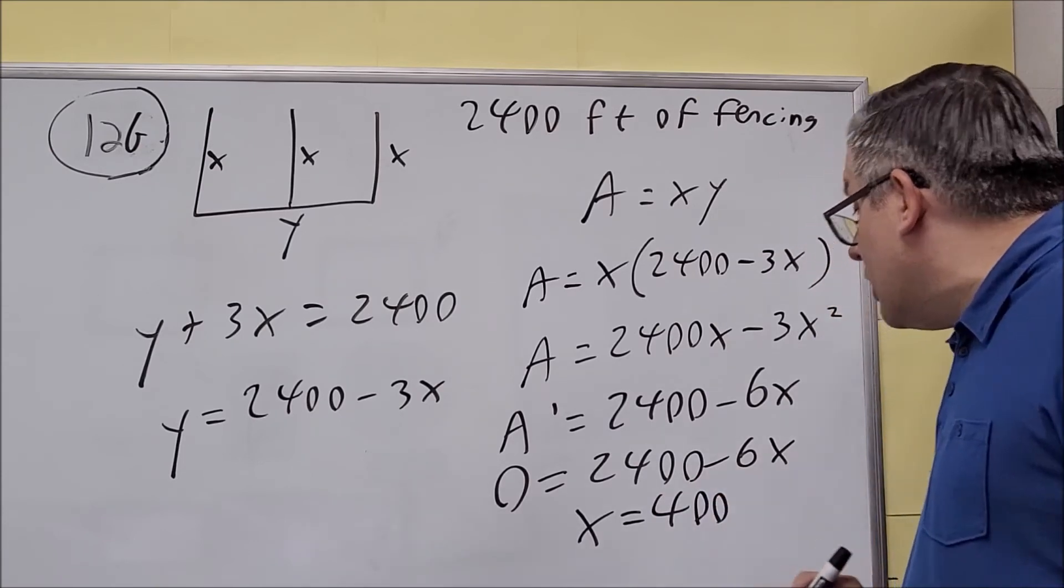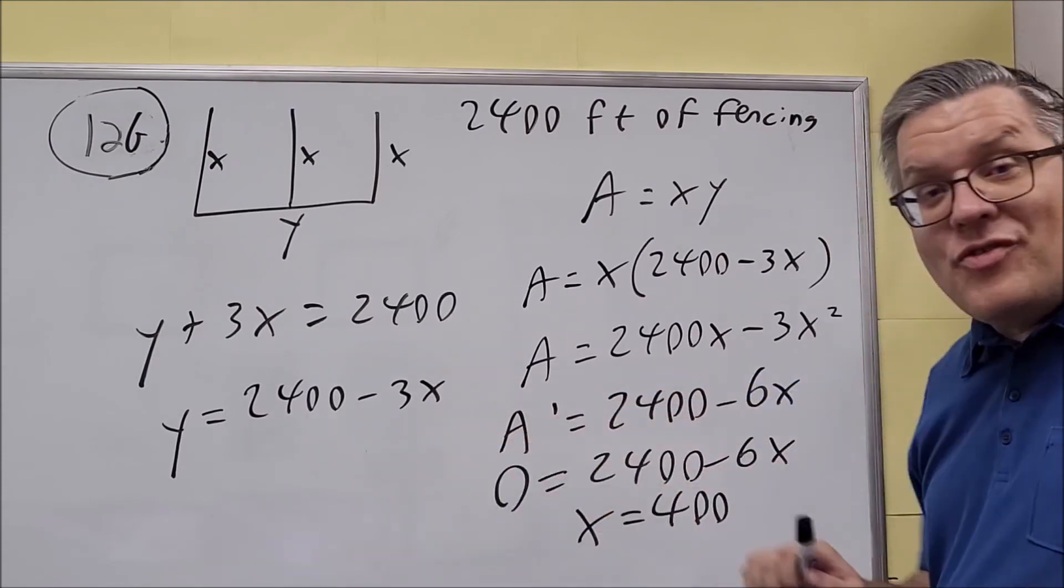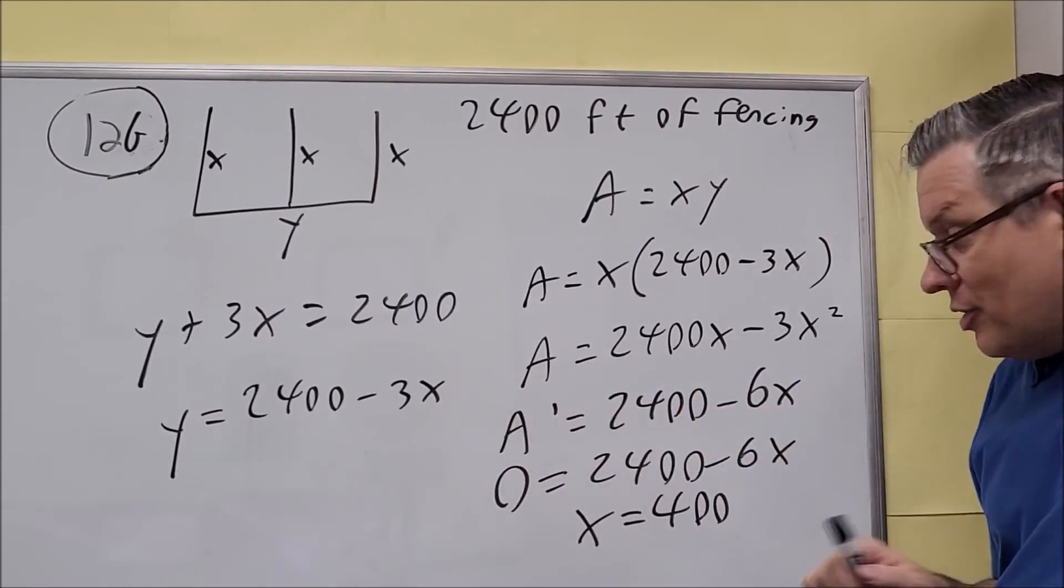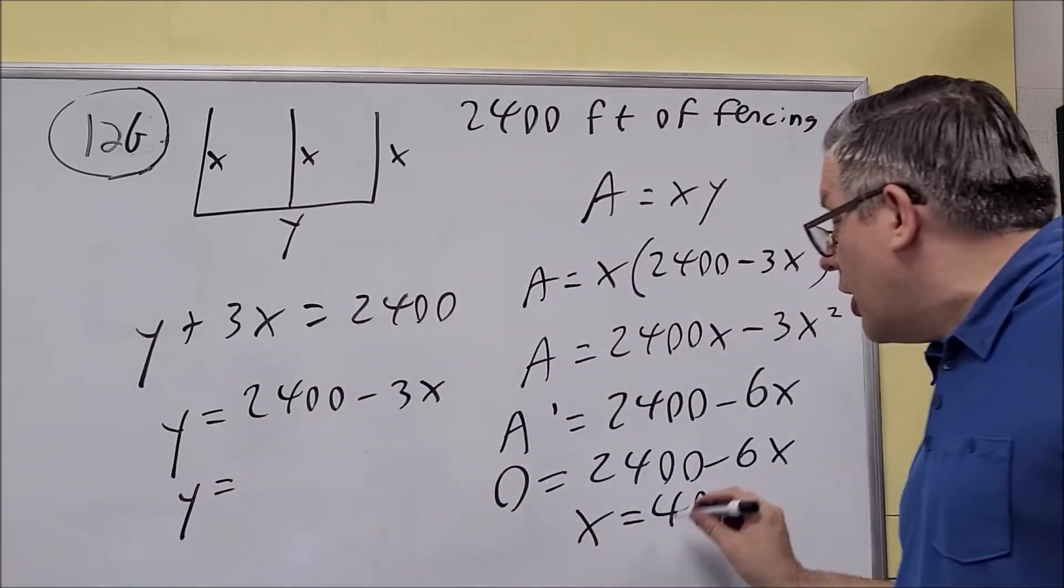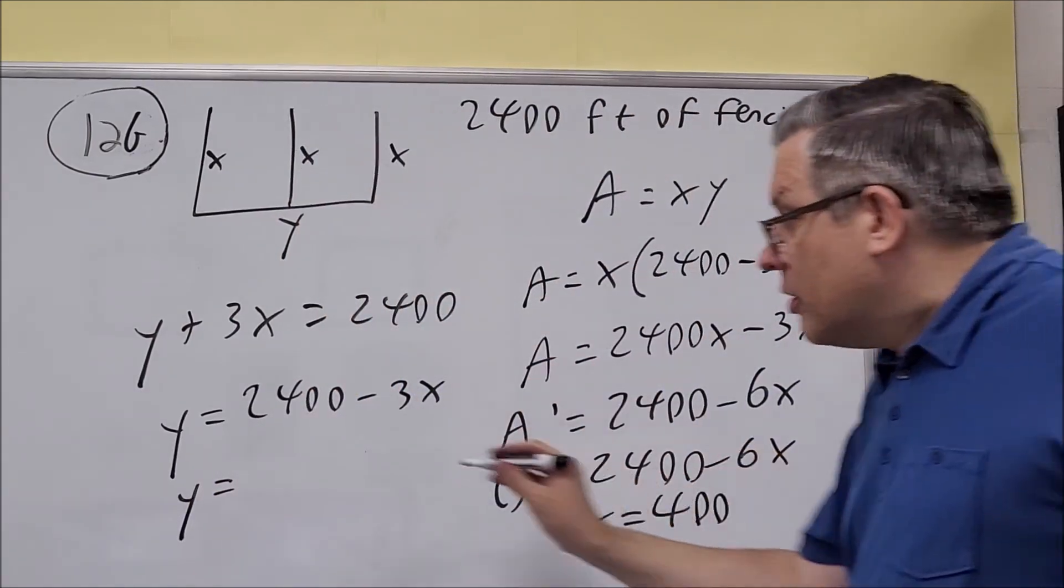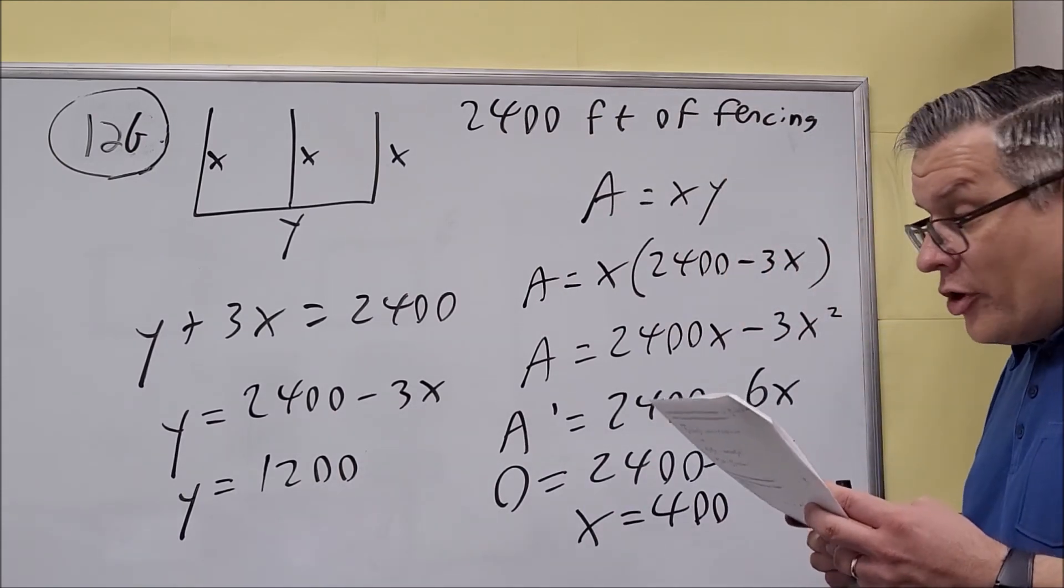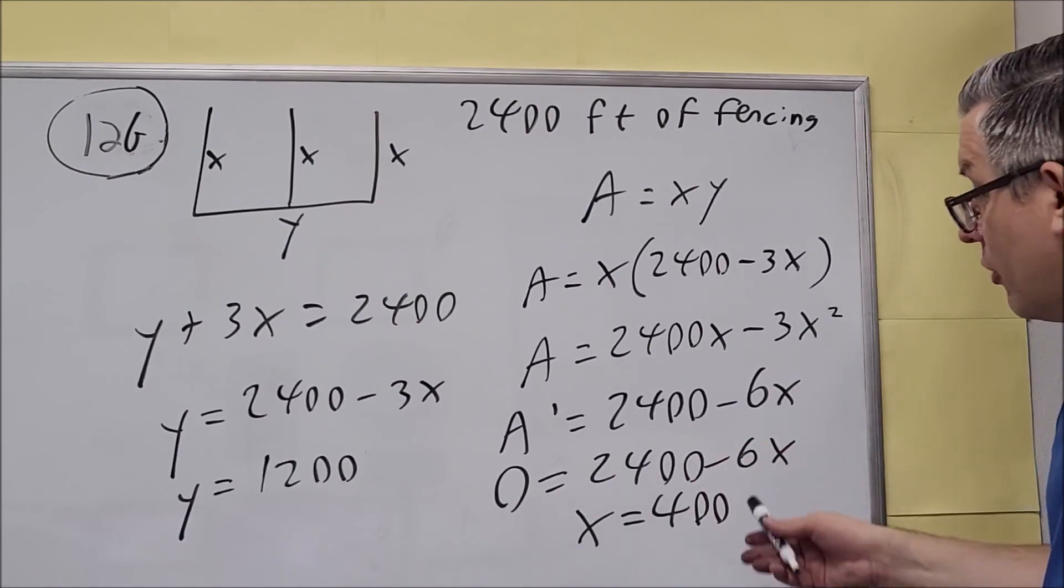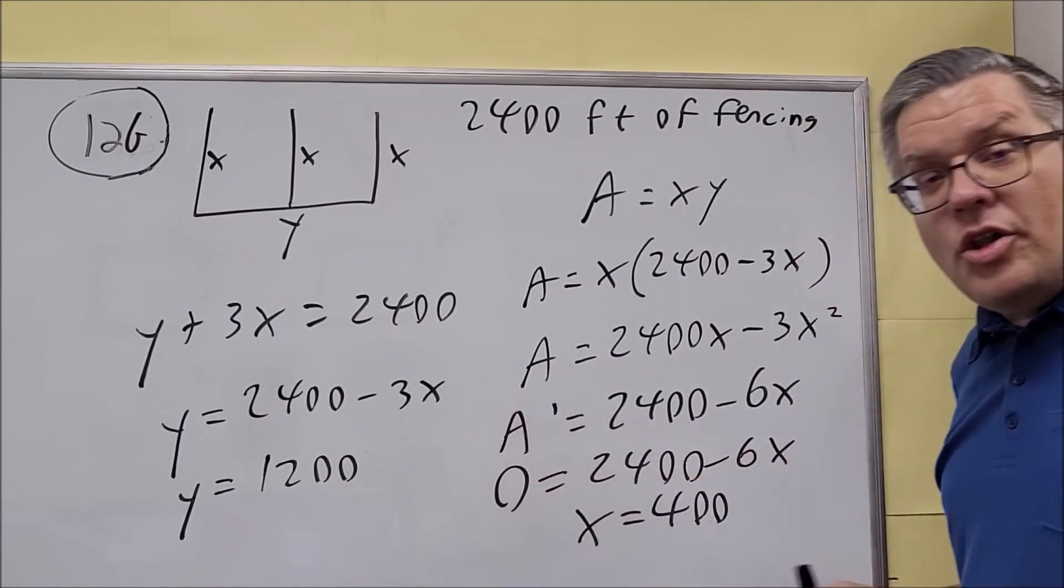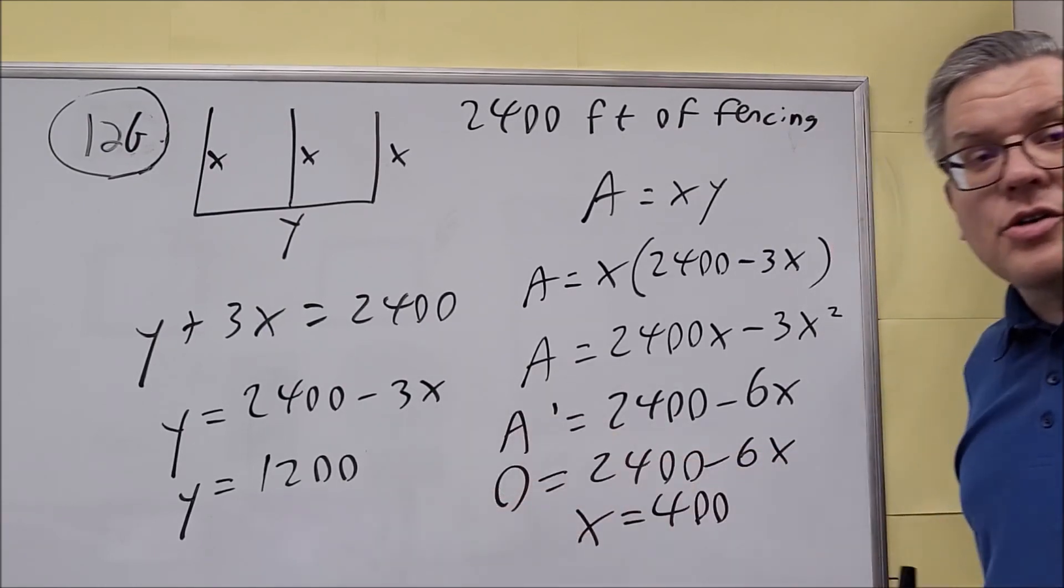400 is the x value, but now we want to find the y value. If you put 400 into that formula, we get 2,400 minus 1,200, which equals 1,200. This problem only asks for dimensions, so we don't have to actually find the area. If it did ask for area, we'd just multiply these two numbers together. The dimensions are 400 and 1,200.